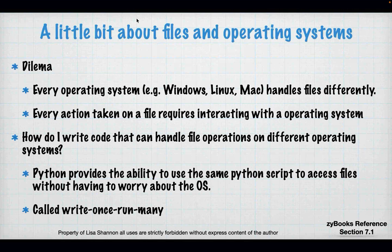All operating systems handle files differently. The Windows operating system handles files and all the structures around them differently than Linux does, differently than Mac does — although Mac and Linux are pretty close. Every action you take on a file, you are going to interact with the operating system. As a computer programmer, I don't want to write a lot of different code to handle different operating systems. Way back when I used to write C and C++, we had to be very careful because you would have to have different code bases for Linux and different operations for Windows.